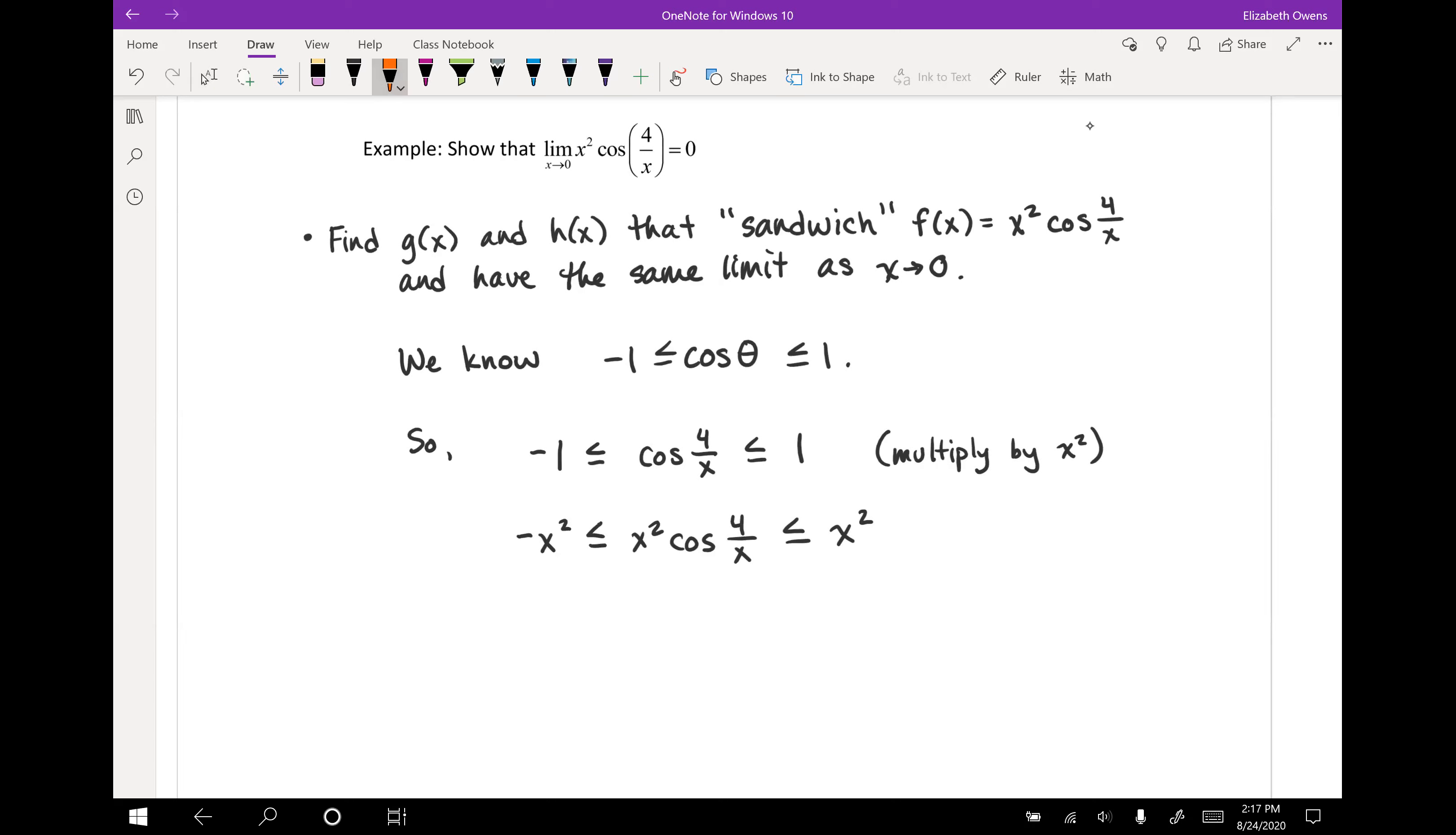So we've set up an inequality sandwich for our functions here. This negative x squared is going to be our g of x. g of x equals negative x squared. In the middle, here's our function f of x. And then over here, x squared, that is our h of x function. Now we should verify here just to make sure that g of x and h of x actually have the same limit as x approaches zero because that's part of our requirements.